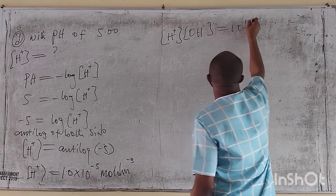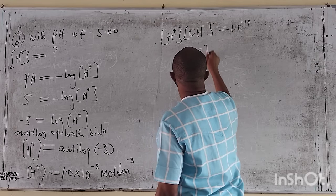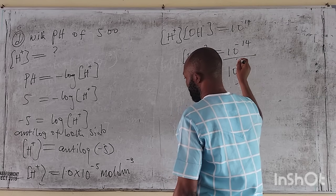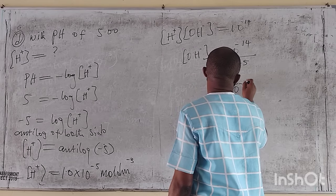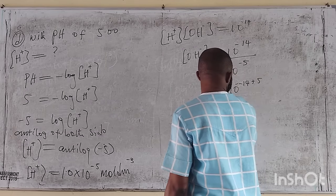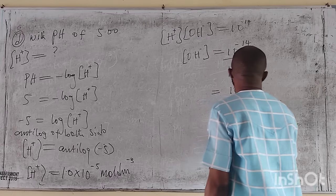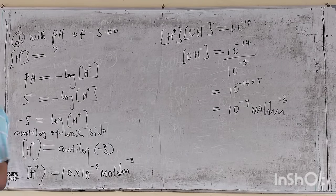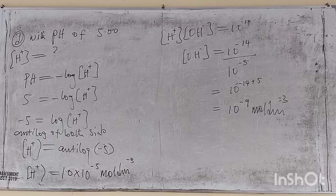The concentration of hydroxide ion equals 10 raised to minus 14 over 10 raised to minus 5, which is 10 raised to minus 14 plus 5, giving us 10 raised to minus 9 mol/dm³. So when pH is 5, the hydrogen ion concentration is 10 raised to minus 5 and the hydroxide ion concentration is 10 raised to minus 9.